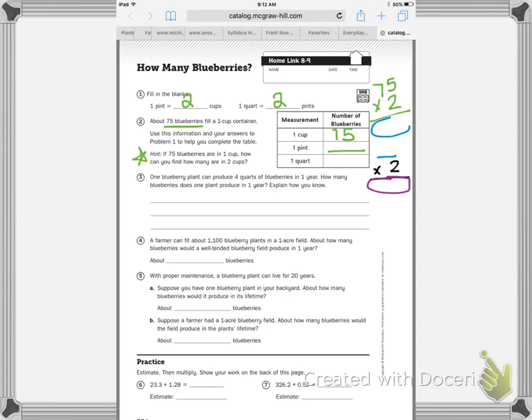Since a blueberry plant can produce four quarts, and that's what we figured out. So purple answer times four equals the total amount in one year. Then make sure you explain your answer.